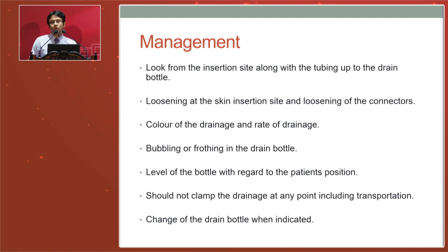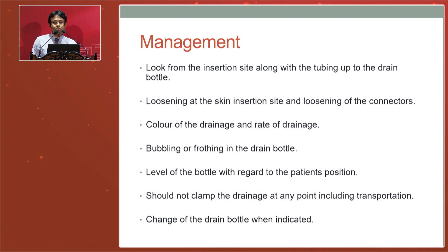The colour and rate of drainage is very important. Frank blood-coloured drainage, blood-stained effusion, or chyle effusion — the colour gives an idea of the underlying clinical condition. Bubbling and frothing is significant: bubbling indicates an air leak from the lung parenchyma, provided you have checked all connectors and the skin insertion site for loosening. If the system is running well and the IC tube is correctly inside the chest cavity, significant bubbling signifies an air leak that may be managed conservatively or require surgical intervention.